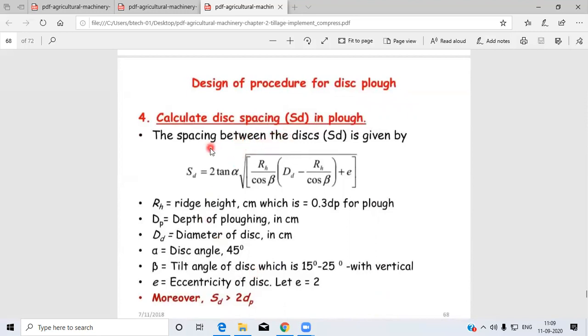Now calculate the disc spacing. The spacing between discs is given by Sd = 2sin(α)√[(R/cos δ)(Dd - R/cos δ) + e], where R is the ridge height in centimeters, determined by R = 0.3dp.